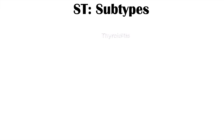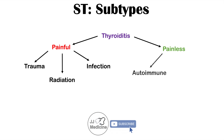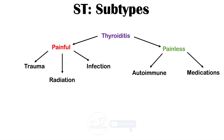Let's talk about some of the subtypes of this condition. We can narrow it down into subcategories depending on whether the thyroid gland is painful or painless. In the case of painful types, trauma, radiation, and infections can be particular causes. Upper respiratory tract infections are oftentimes going to be what precedes the onset of this condition, but there can be other causes including trauma and radiation. Painless cases can be caused by autoimmune conditions and medications.